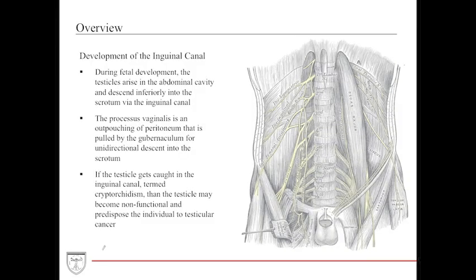During male fetal development, the testicle will actually arise in the abdominal cavity. It will then descend inferiorly into the scrotum via the inguinal canal. A structure called the processus vaginalis is an outpouching of the peritoneum that attaches to the gubernaculum and is pulled in a unidirectional manner into the scrotum.